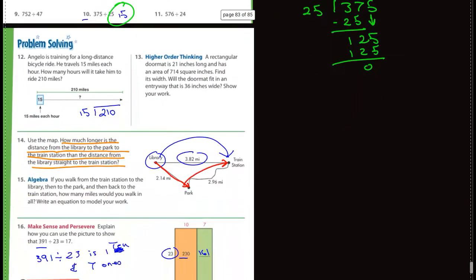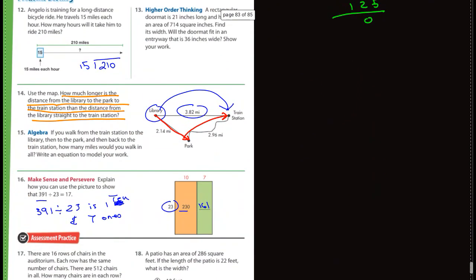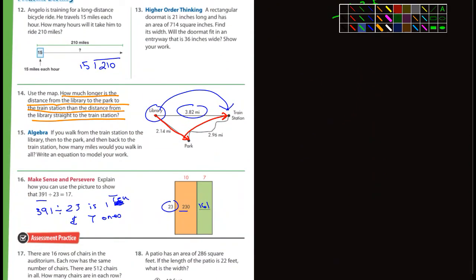Let's see here. Let's move down to the last page. And in number 12, I simply pointed out that he's traveling 15 miles an hour and he's riding 210 miles. So that's going to be 210 divided by 15. You should be able to do that.